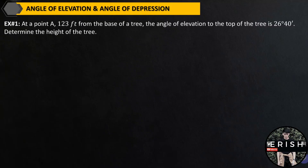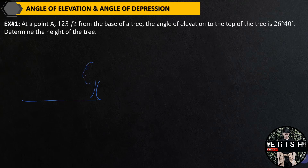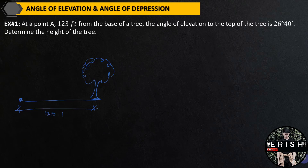Example number 1. At a point A, 123 feet from the base of a tree. Let's draw it now. This is the horizontal ground. This is our tree. At point A — this is our point A. The distance from the base of the tree is 123 feet. This is point A.